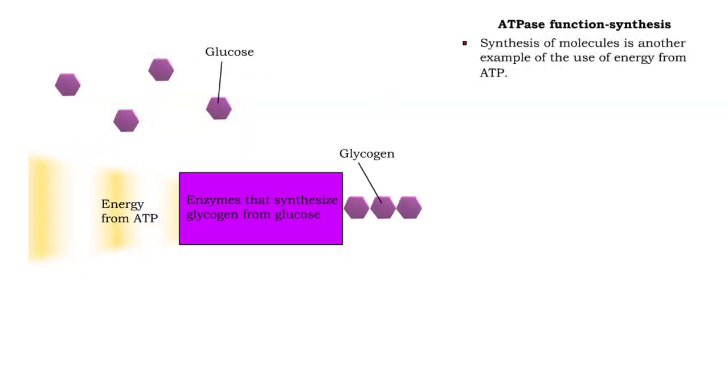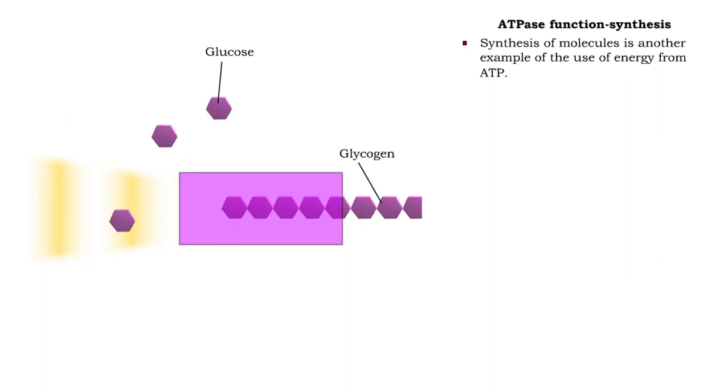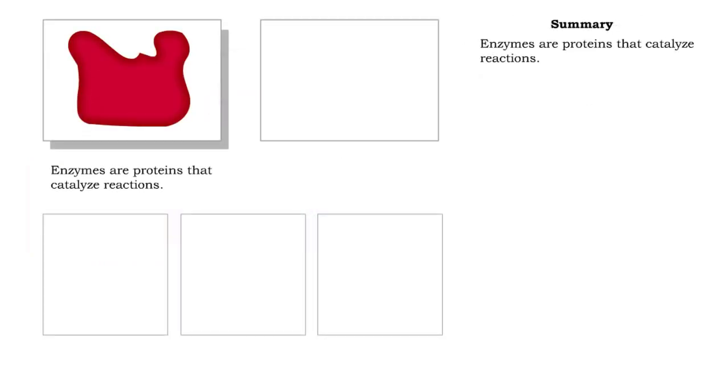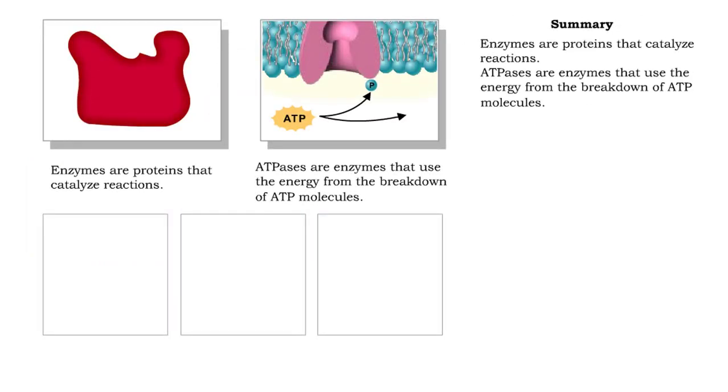A third use of ATP is in the synthesis of molecules. In this example, glycogen is synthesized from glucose by a series of enzymes. The properties of enzymes make them very important for effective functioning of many cellular processes.